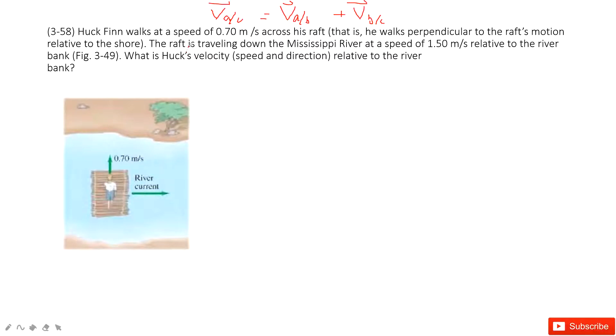the raft is traveling down the Mississippi River at a speed of 1.5 meters per second relative to the bank. The question asks you to find the velocity of the person relative to the bank.